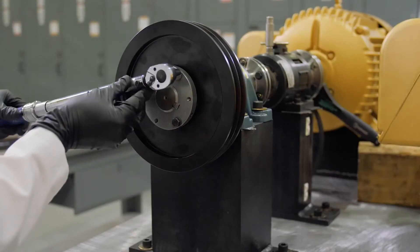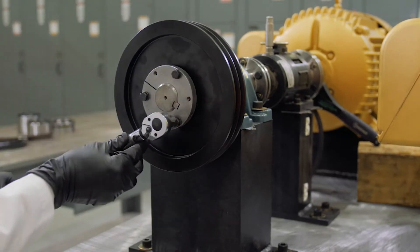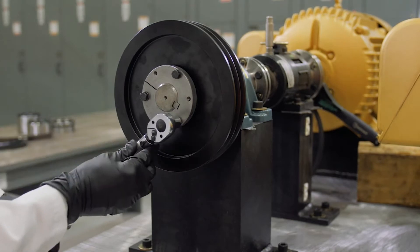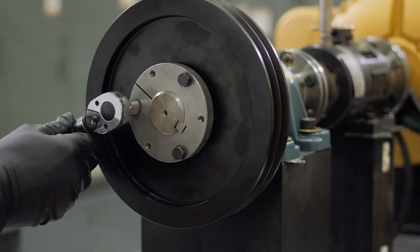Tighten bolts alternately and evenly in a star pattern to the torque value shown in the instruction manual with a calibrated torque wrench. Over-torquing can result in damage to the hub or bushing.